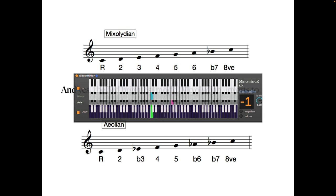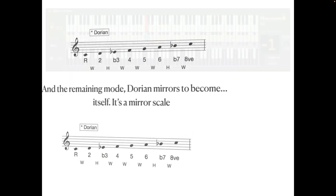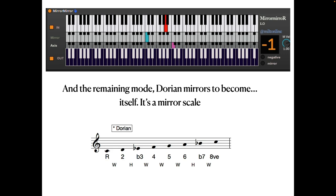That's six of the seven, so what remains? Dorian. Dorian becomes itself. It's a palindromic mirror scale.